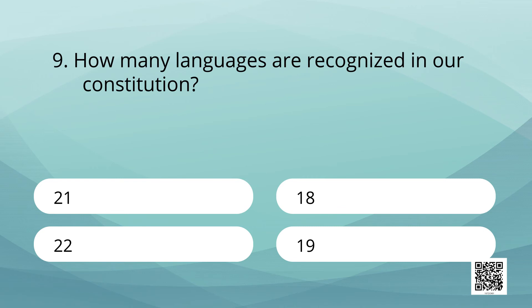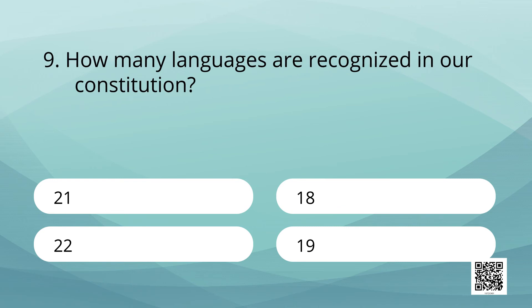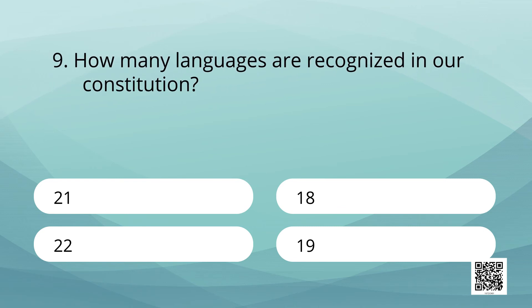How many languages are recognized in our constitution? Options are 21, 18, 22, 19. Answer is 22.